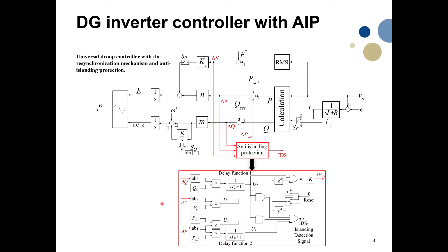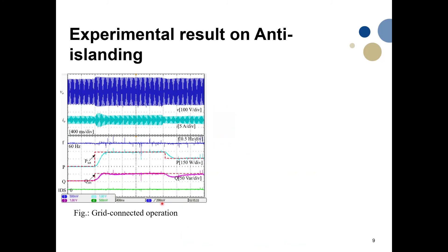We tested this anti-islanding detection for different scenarios. In the first scenario, we performed offline synchronization, turned on the converter, and it supplied power to the grid. The green line is the islanding detection signal. We changed the power reference of the inverter and it follows the reference accordingly for both active and reactive power. The system is stable, and during the power reference change, the islanding detection signal remains zero — meaning no false islanding detection is triggered.